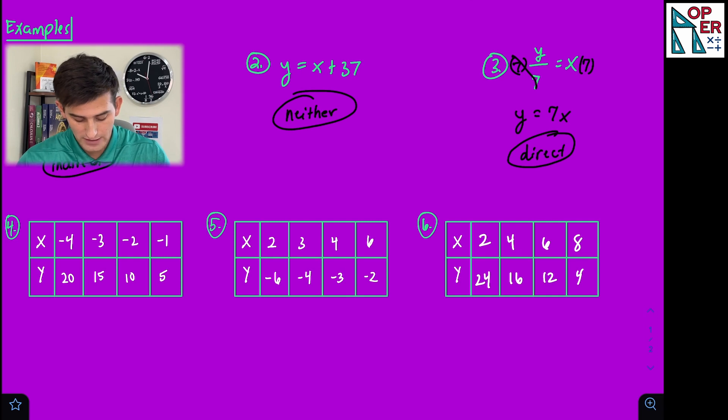For number four, we have x values of negative four through negative one, y values of 20, 15, 10, and five. So if we look at these, we could say y divided by x.